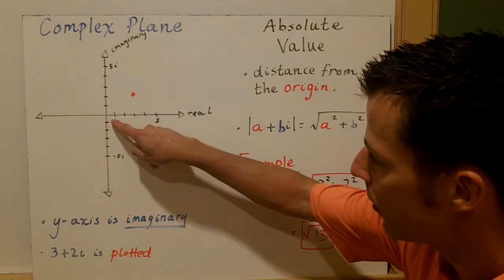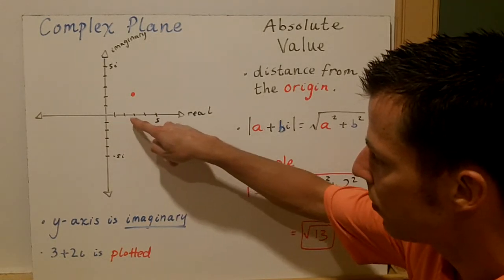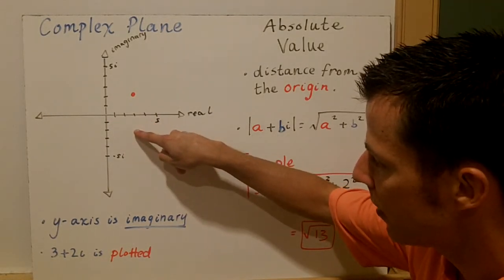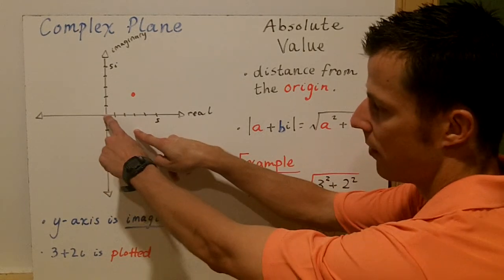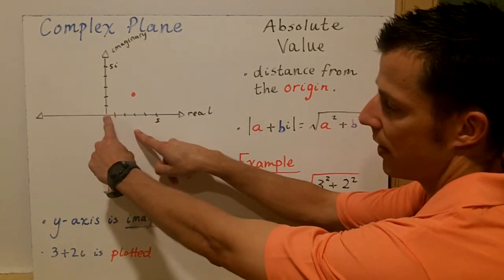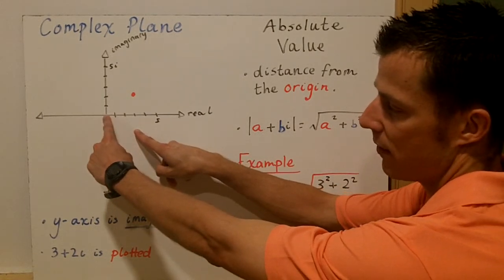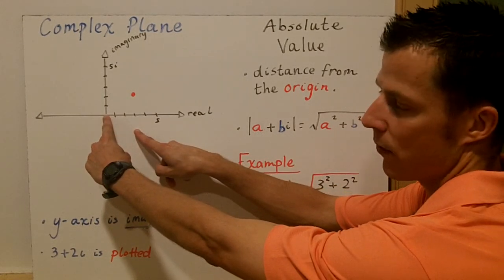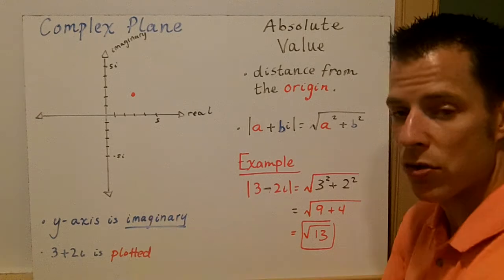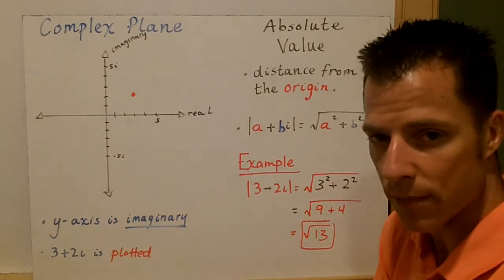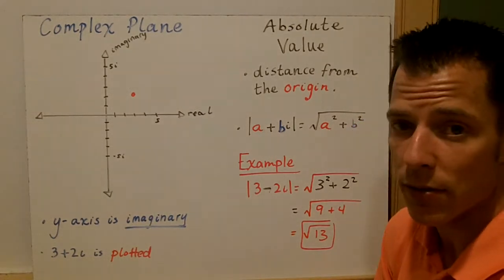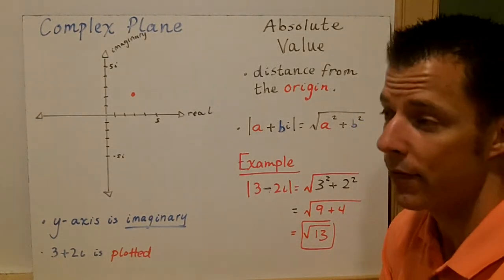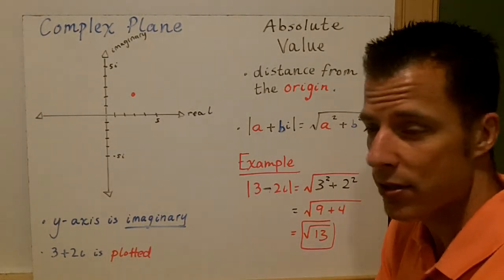So three minus two-i would be plotted right here, and the distance from the origin to that point would be the square root of thirteen. Distance is always going to be real — we're not going to have an imaginary distance.